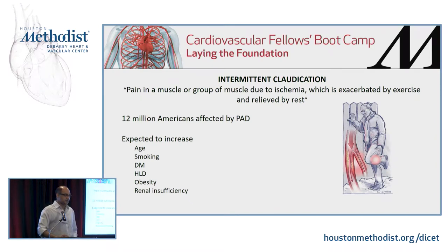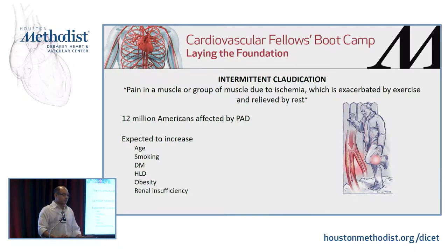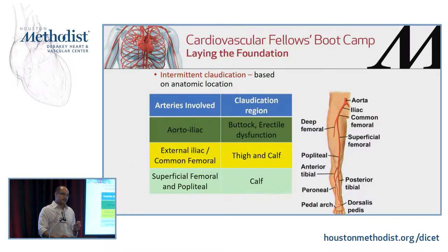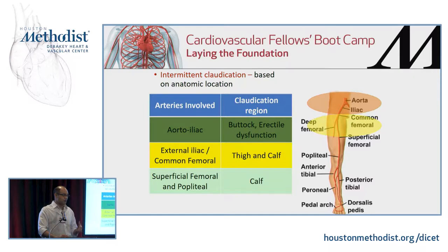Intermittent claudication is pain in a muscle or group of muscles due to ischemia, exacerbated by exercise and relieved by rest - that is the classic definition. Claudication is based very classically on where your obstruction is. If you have aorto-iliac occlusive disease, you'll probably have buttock claudication or erectile dysfunction. Common femoral or profunda femoris disease gives thigh and calf claudication. Superficial femoral disease usually restricts claudication to below the knee. A good history can also tell you the location.